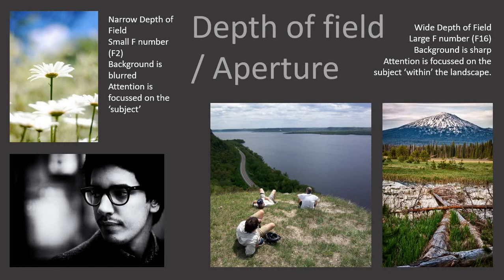To review these three techniques — depth of field, created by aperture. A narrow depth of field uses small F numbers like F2, which causes the background to go blurred — that's good because you want attention on the foreground subject like a flower or a person. A wide depth of field with a large F number like F16 keeps the background sharp and attention is focused on the subject within the whole landscape. The way to remember this: a small number is a small view, a large number is a large view.